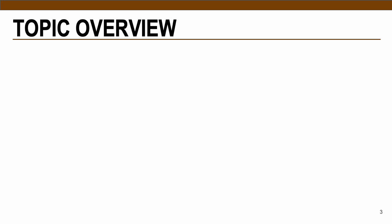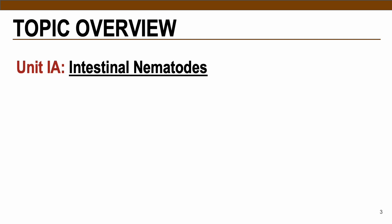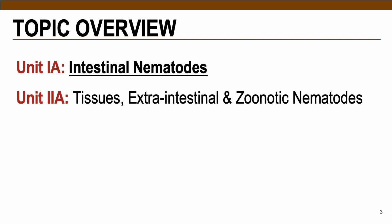Here is the topic overview. Nematodes are divided into two classifications based on the location of their adults in the human host. This week we'll talk about intestinal nematodes — roundworms that inhabit the large and small intestine — while the following meeting will cover tissue, extraintestinal, and zoonotic nematodes.